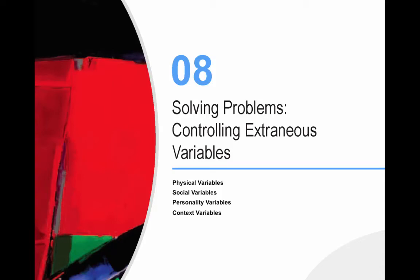Today we're going to be talking about Chapter 8 from our book, which is Solving Problems Controlling Extraneous Variables. It might be helpful to start by defining what an extraneous variable is — it is anything outside of our experiment that could confound our results.